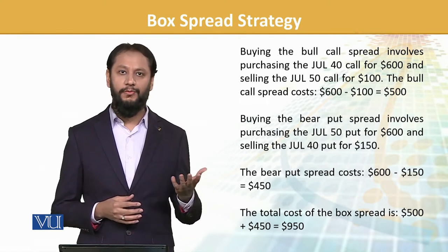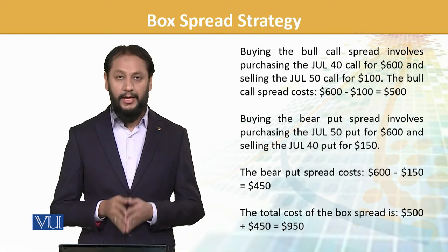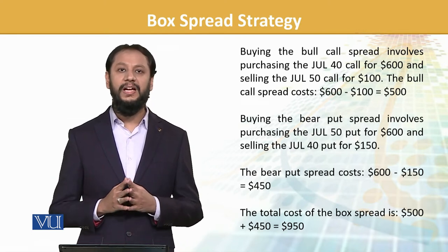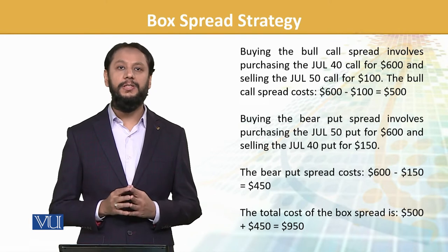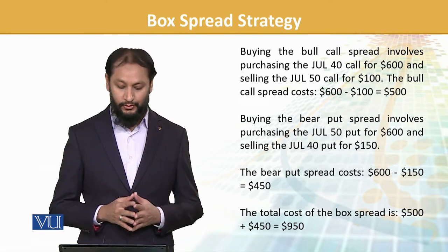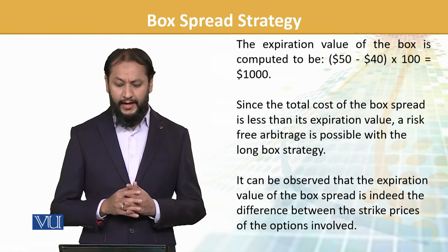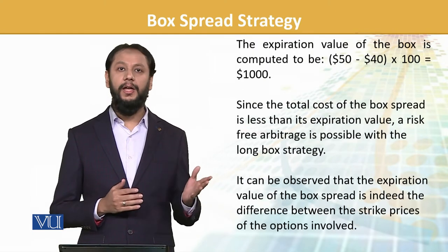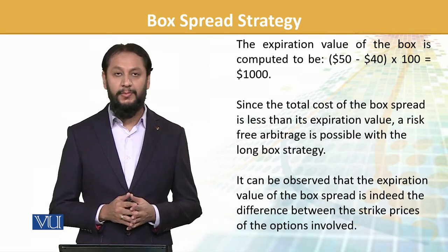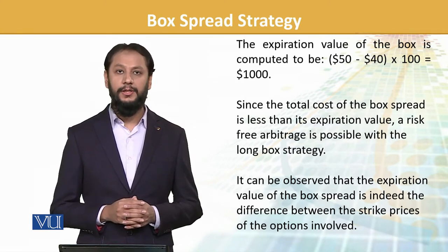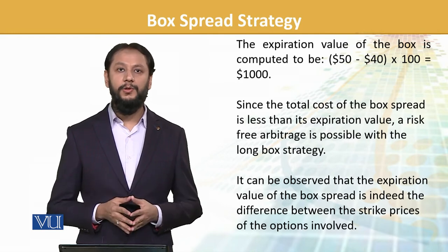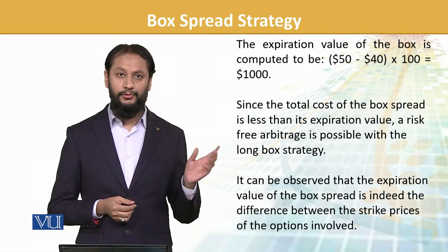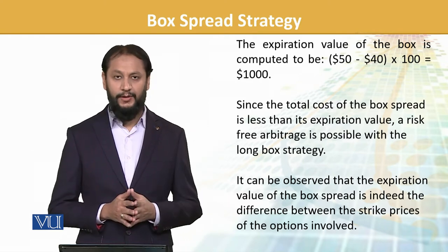जब दोनों को combine करेंगे: the bull call spread costs $500 and the bear put spread costs $450, giving a total outflow of $950. At expiration, the value is calculated as: higher strike minus lower strike × 100, i.e., (50 − 40) × 100 = $1000. So the expiration value is $1000 while we locked in at $950.